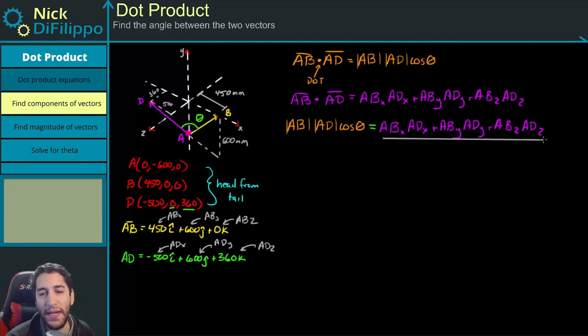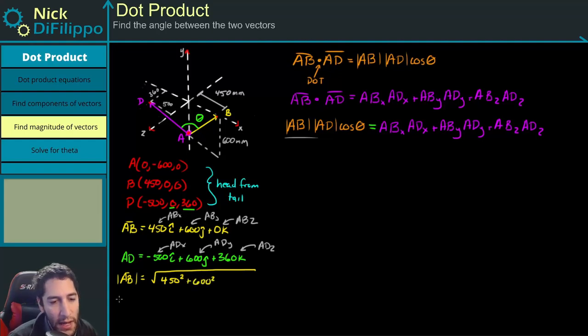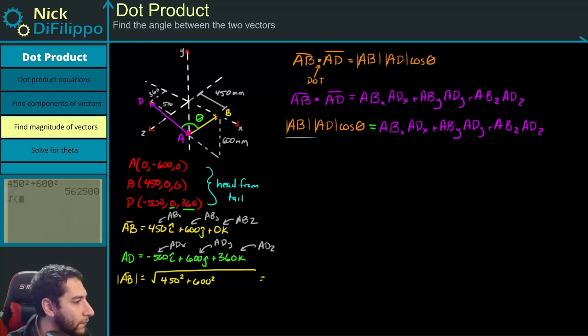Now, I know everything on this side now, I need to figure out what's on this side. To find out what's on this side, I need the magnitude of these two vectors. So to find the magnitude, if we look at AB, the magnitude of this vector AB is going to be equal to the square root of the sum of all its components squared. So 450 squared plus 600 squared, and then if we do this, we get 750. So its magnitude is 750 millimeters.